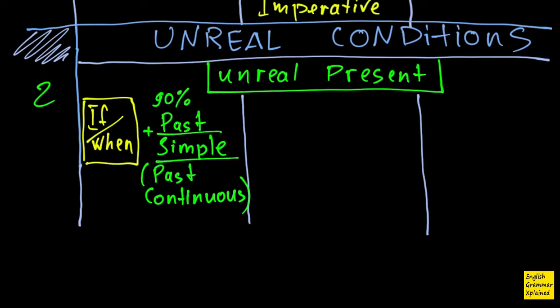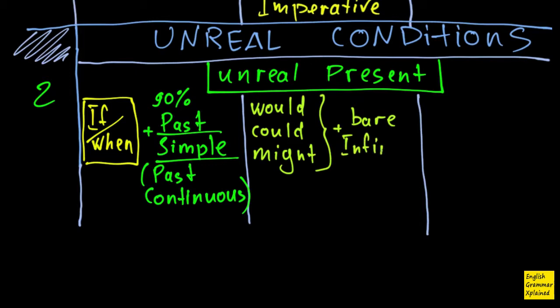And what about the main clause? What do we have in the main clause? In the main clause, we have basically a bunch of modal verbs. That's would, could, might, with bare infinitive. That's very important. Bare infinitive. Not full, bare. So what is bare infinitive? That's the infinitive without to. For example, this thing might go, or could sleep, and so on, just like this.